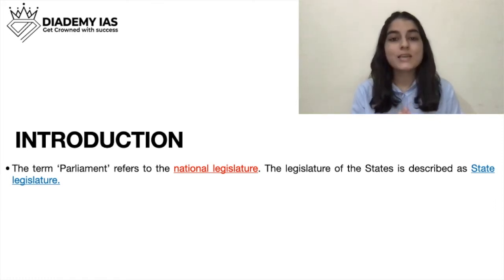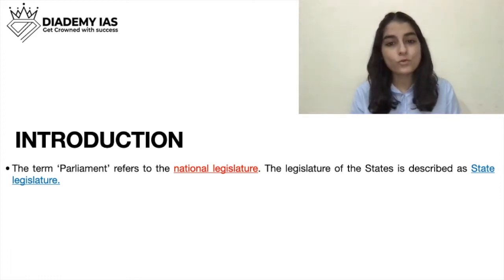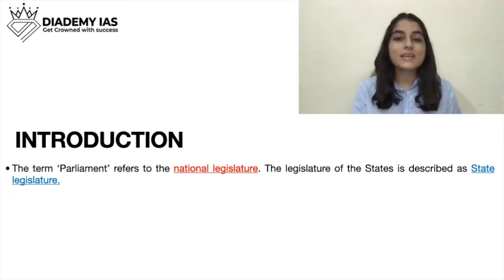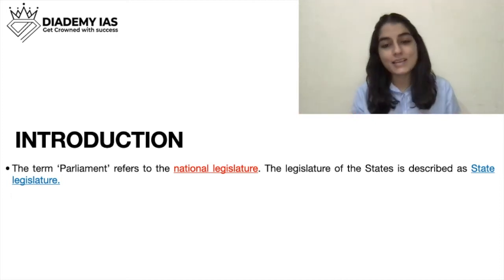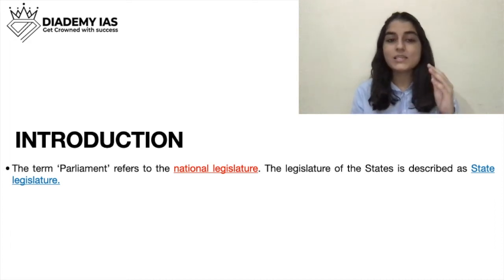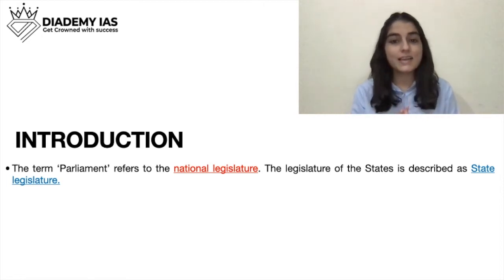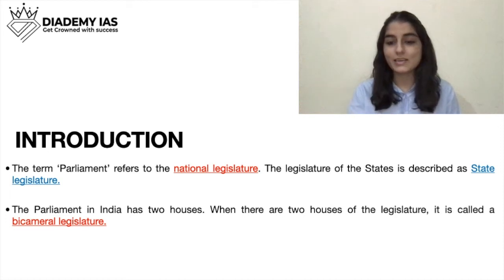The states which have only one house, that house is called the Legislative Assembly. The states which have two houses — the first house is the Legislative Assembly and the second house is the Legislative Council. At the national level we have a bicameral parliament, but at the state level only seven states have a bicameral legislature.